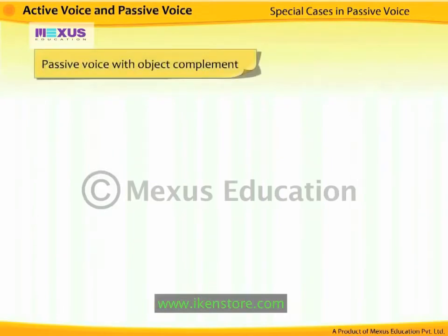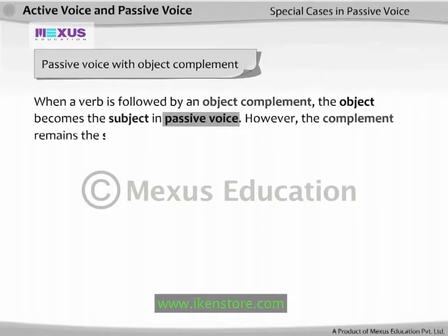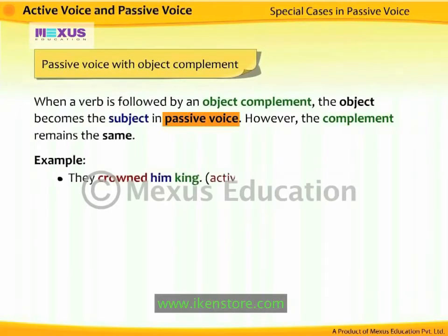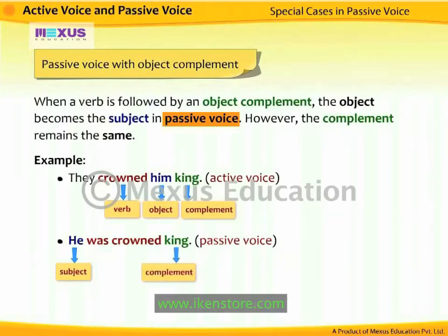Passive voice with object complement: when a verb is followed by an object complement, the object becomes the subject in passive voice; however, the complement remains the same. For example, 'They crowned him king' becomes 'He was crowned king.' The object 'him' becomes the subject, but the complement 'king' remains the same.